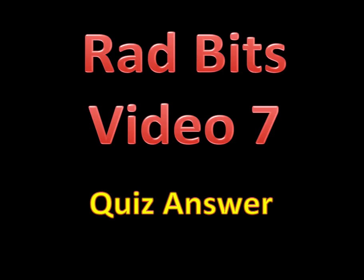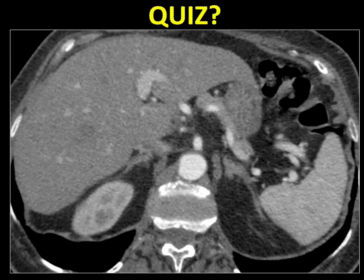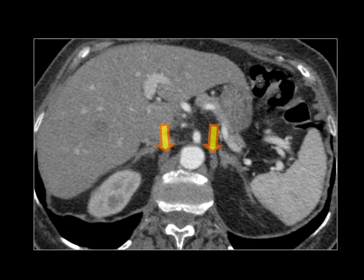Welcome back to the answer on the quiz that we posted on the rabbits video number seven. The question was: what are those two structures? You might have thought they represent part of the adrenal glands; however, the adrenal glands are seen in a normal suprarenal fossa location.